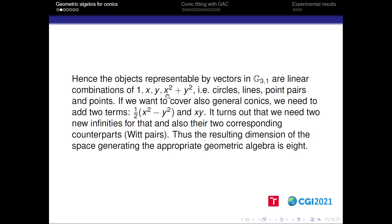We may see that four terms are not enough to describe the conic so we must add two more terms, in particular half of x squared minus y squared and the mixed term xy. Moreover, it turns out that we need also two new infinities and two new origins.